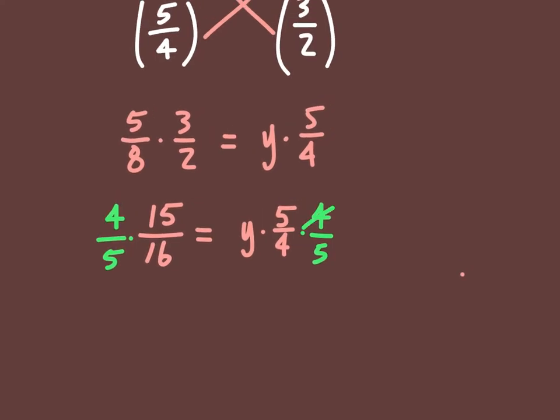And then your 4s are going to divide out. Your 5s are going to divide out. So, on the right side of your equation, you're simply just left with y.